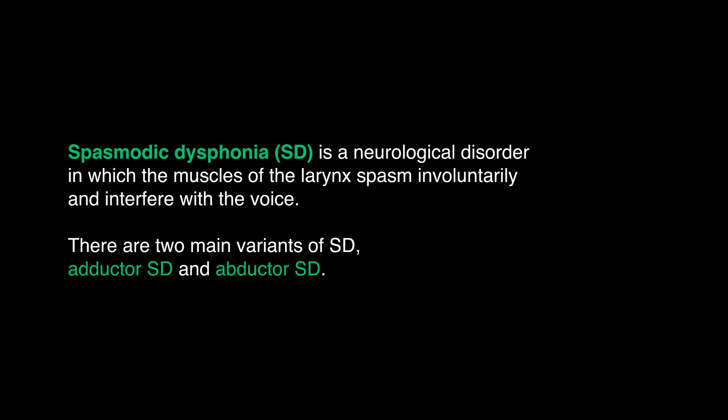Spasmodic dysphonia is a neurological disorder in which the tiny muscles of the larynx spasm involuntarily in different ways and interfere with the smooth production of voice. There are two main variants: adductor, which is about nine out of ten cases, and abductor, which is about one out of ten.